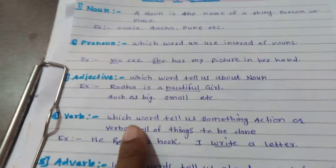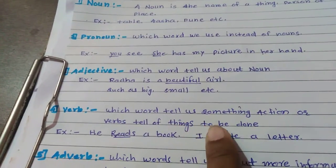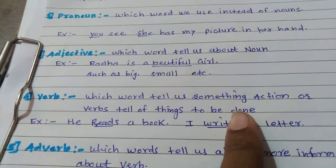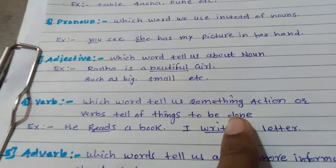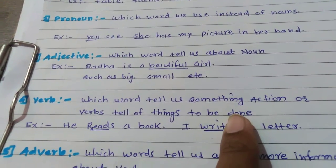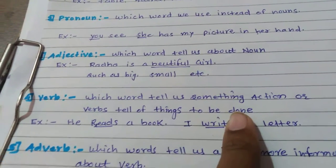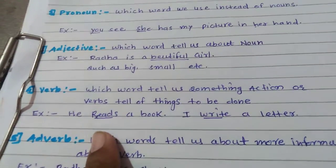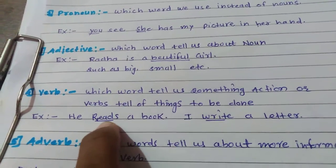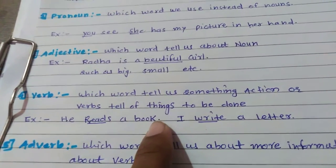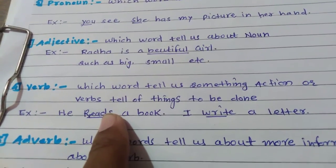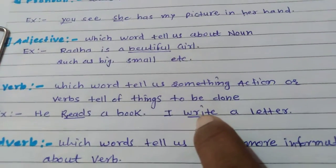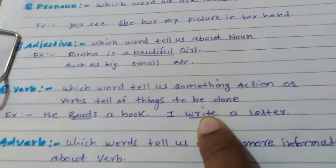Next is verb. The word that tells us something — an action — or the work being done is called a verb. In every sentence, verb plays a very very important role. Without a verb, we cannot construct any sentence. Verb shows the action. For example: 'He reads a book.' If we omit 'reads,' we get 'He a book' — no meaning. So 'reads' plays a very important role and is called a verb. Another example: 'I write a letter' — 'write' indicates the work of writing, so that is the verb.